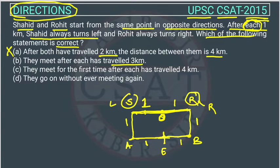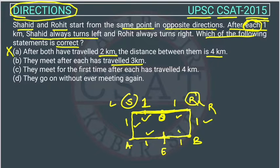The second statement says they meet after each has traveled three kilometers. Shahid traveled one kilometer, then one kilometer, then one kilometer and reached the meeting point. Similarly, Rohid traveled three kilometers and reached here. This is correct — each traveled three kilometers and they are meeting.